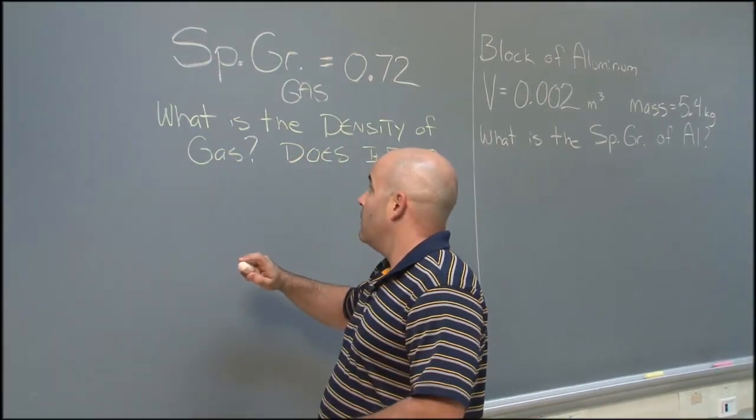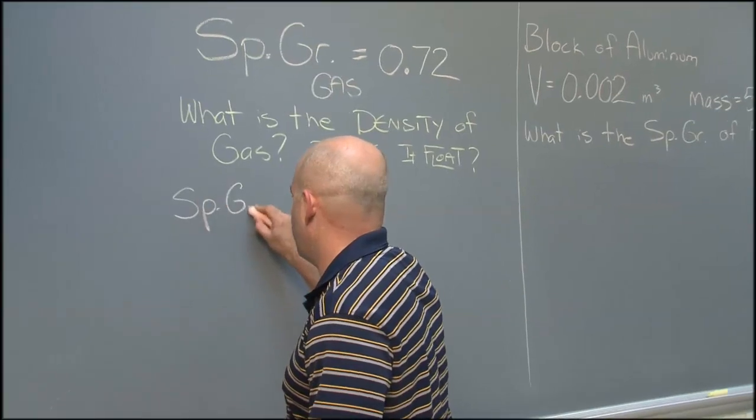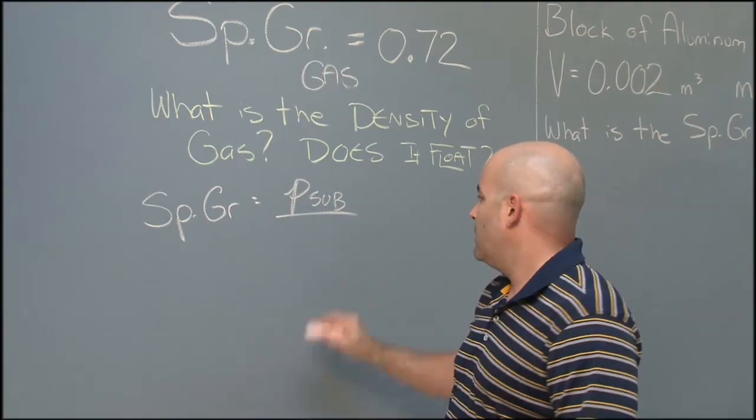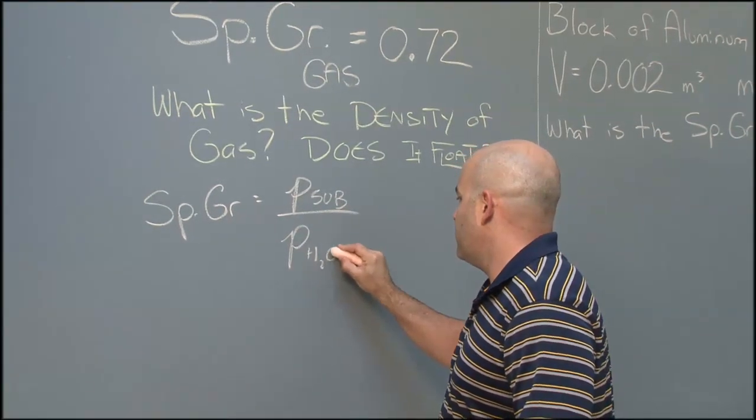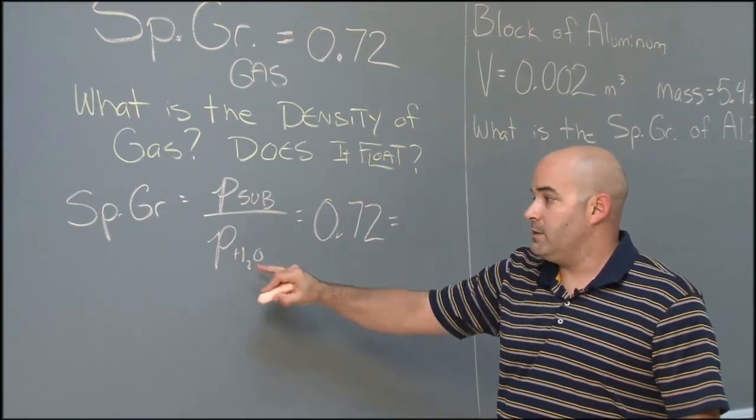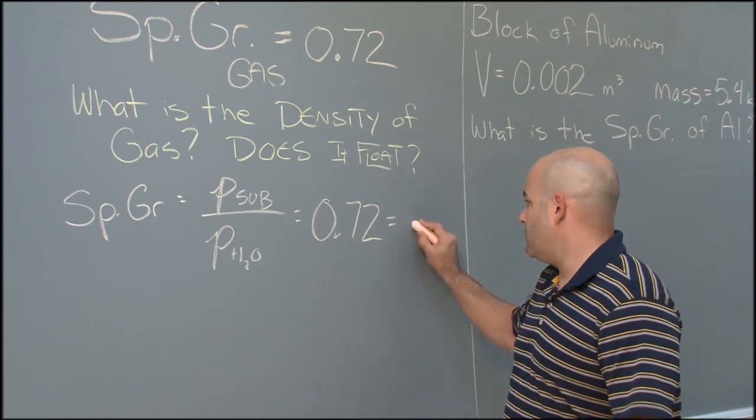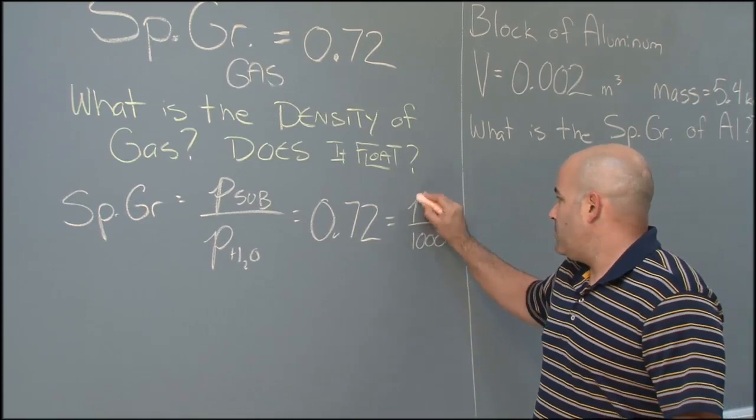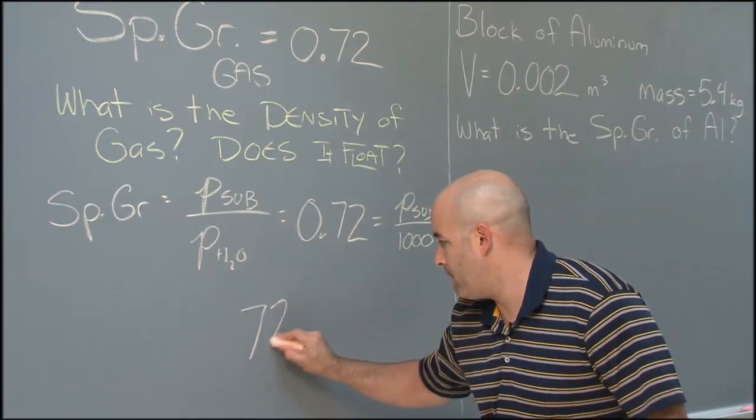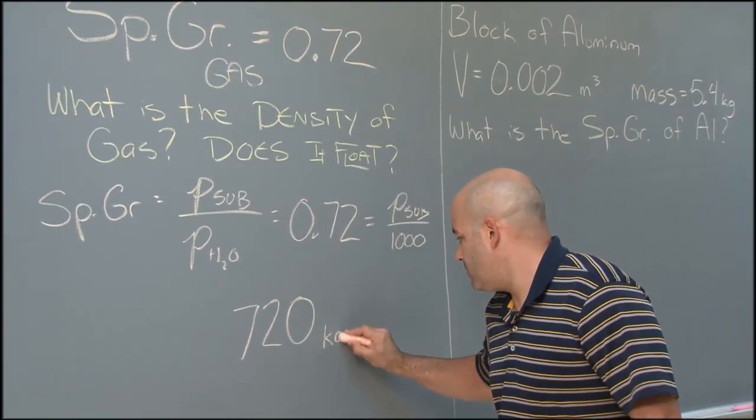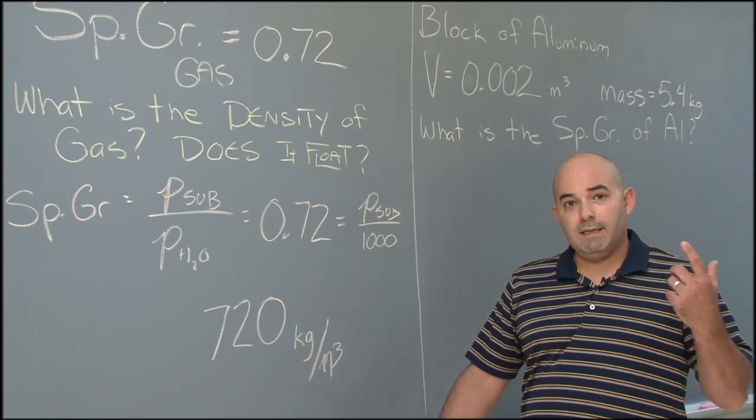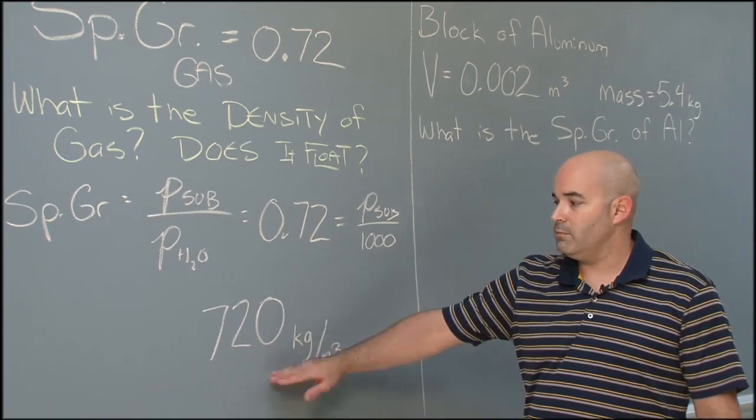We know the formula for specific gravity is the density of our substance here, that substance would be gasoline, divided by the density of water. The specific gravity is given. We've got the density of water already memorized, hopefully. That should be 1,000. A little bit of algebra magic and we should get the density of gasoline is 720. Units on that kilograms per meter cubed. Just as we expected, it is less than the density of water. Tells us that floats.